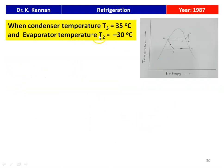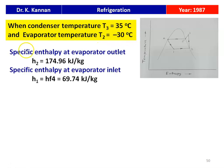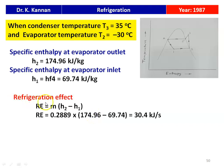When the evaporator temperature is altered to minus 30 degree Celsius (condenser temperature unchanged at 35 degree Celsius), H2 changes to 174.96 kJ/kg while H1 remains 69.74 kJ/kg. The new refrigeration effect equals M multiplied by (H2 minus H1): 0.2889 multiplied by (174.96 minus 69.74) equals 30.4 kJ/s. The refrigeration effect for the modified condition is 30.4 kJ/s.